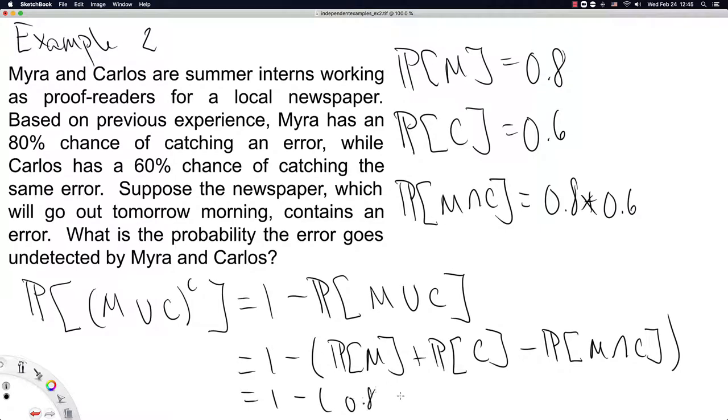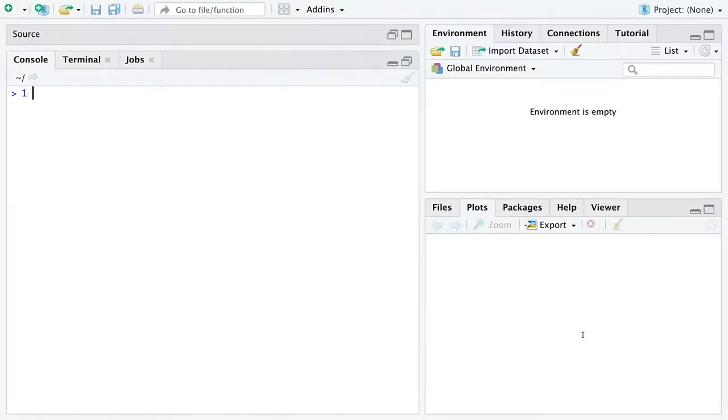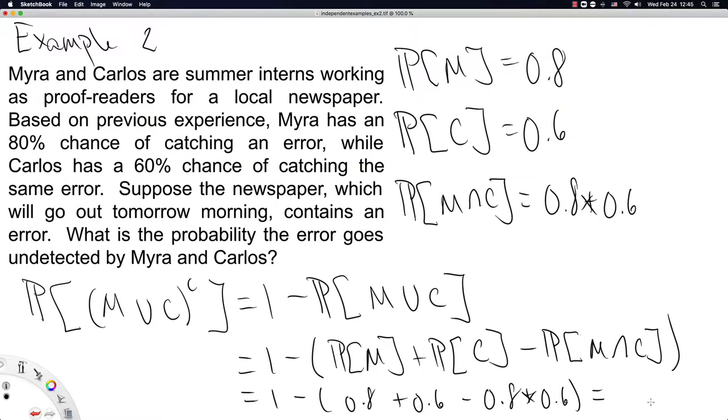So we've got 1 minus 0.8 plus 0.6 minus 0.8 times 0.6. This isn't a very difficult problem to solve, but to remind you all that R is your friend, we can just do it in R. Oh, 8%. That's nice. So there is an 8% chance that the error goes undetected. Well that's actually pretty nice. There's less than a 10% chance that the newspaper will go out with an error tomorrow morning. That's quite nice. And it was all based on properties of probabilities and independence.